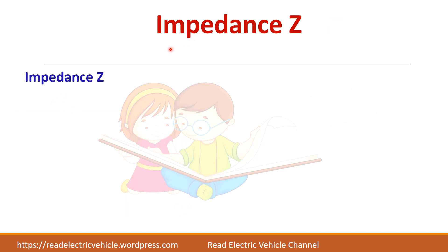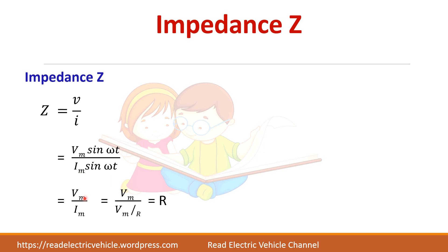Next we will find the impedance of a pure resistive circuit. Z = V / I. V = Vm sin(ωt) and I = Im sin(ωt), so Z = Vm / Im. Since Im = Vm / R, we get Vm / Im = R. Therefore, the total impedance in a pure resistive circuit is equal to the resistance R.